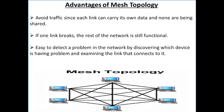Now we have advantages of mesh topology. There is no traffic since each link can carry its own data and none are being shared — there is no network congestion because every node has a point-to-point link and the particular medium carries its own data. If one link breaks, the rest of the network is still functioning — a broken link does not affect the complete network. It is also easy to detect a problem in the network by discovering which device is having a problem and examining the link that connects to it.